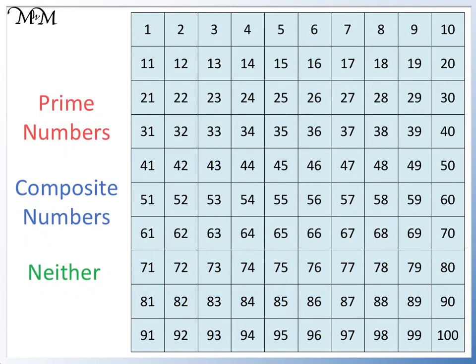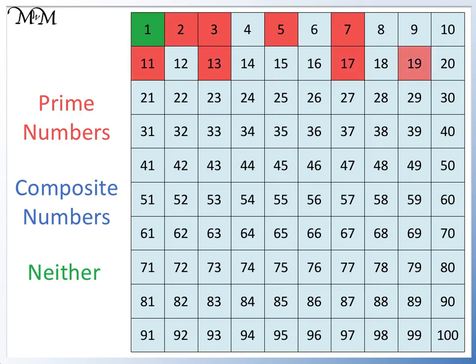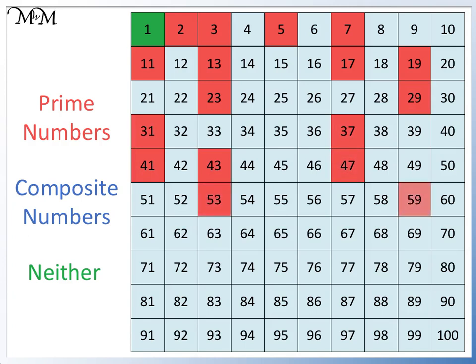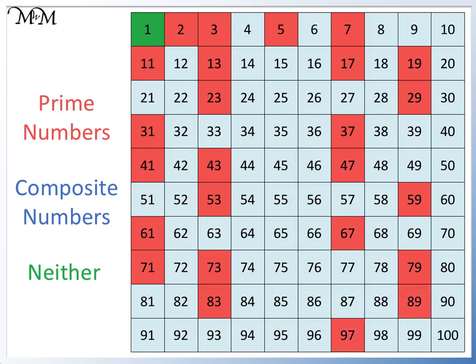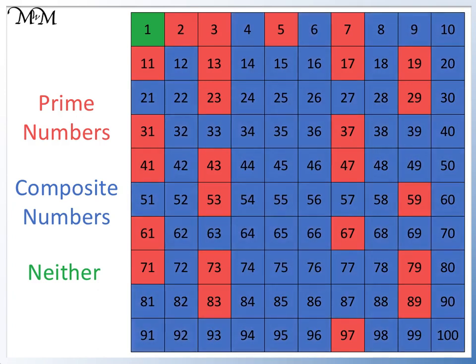Here is our number grid to 100. 1 is neither prime nor composite. We will mark the prime numbers to 100: 2, 3, 5, 7, 11, 13, 17, 19, 23, 29, 31, 37, 41, 43, 47, 53, 59, 61, 67, 71, 73, 79, 83, 89, and 97. We can see that there is no pattern. The prime numbers are randomly scattered on the grid. The other numbers are composite numbers and are not prime.